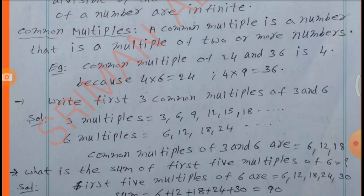Write the first three common multiples of 3 and 6. Multiples of 3 are 3, 6, 9, 12, 15, 18 and so on. Common multiples of 3 and 6 are 6, 12, 18 and so on.